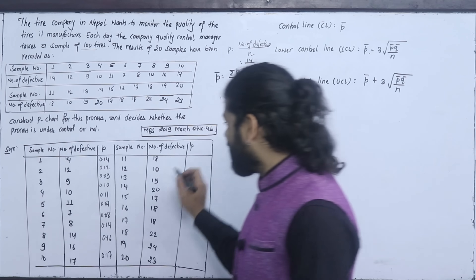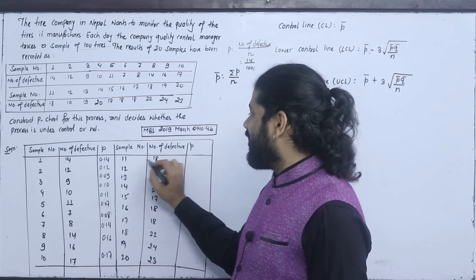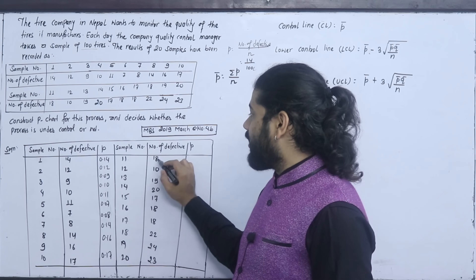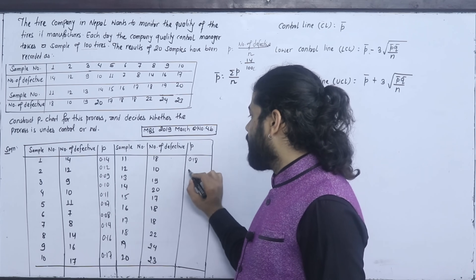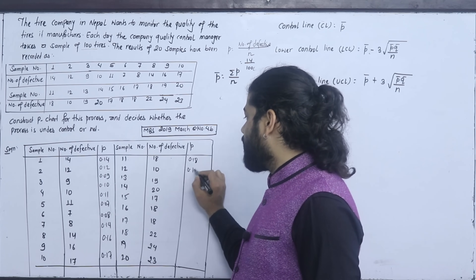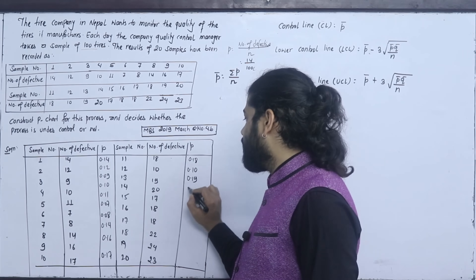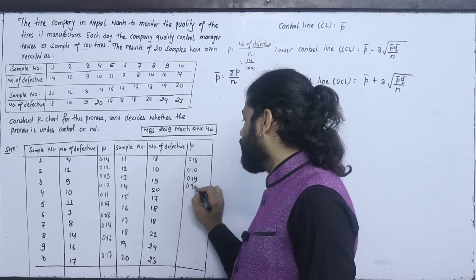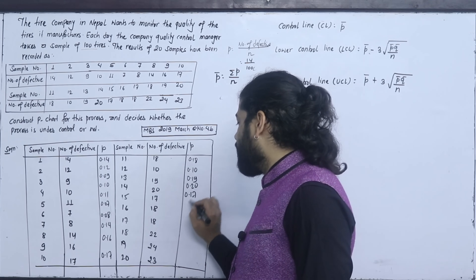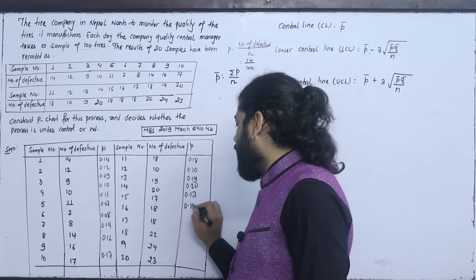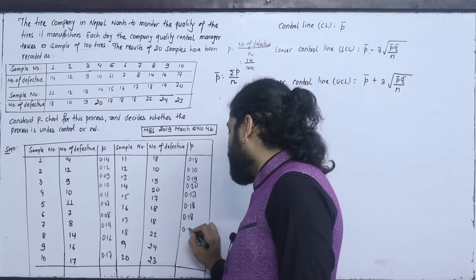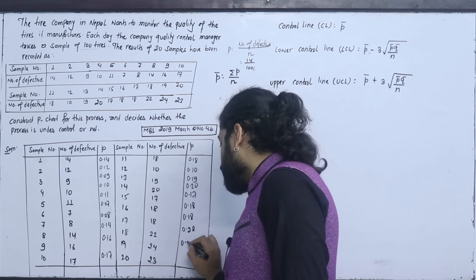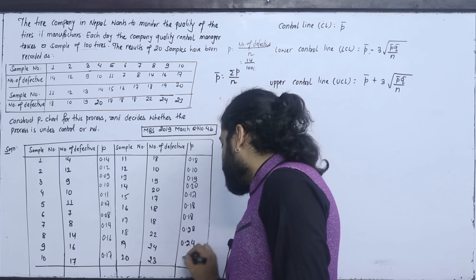Continuing the proportions: 0.18, 0.19, 0.20, 0.17, 0.18, 0.18, 0.22, 0.24. These are the proportion values for samples 10 through 18 by dividing each defect count by 100.